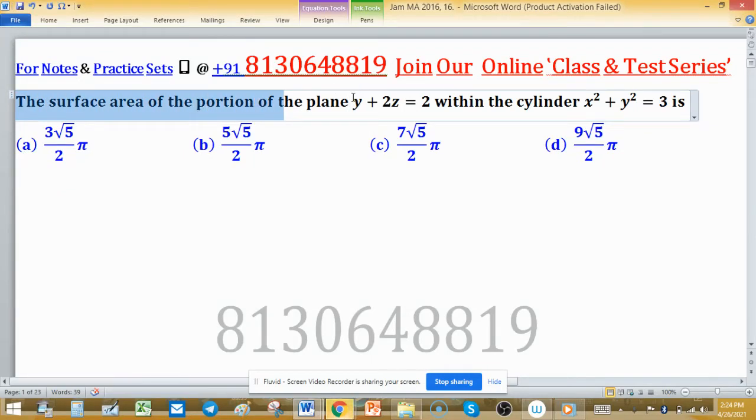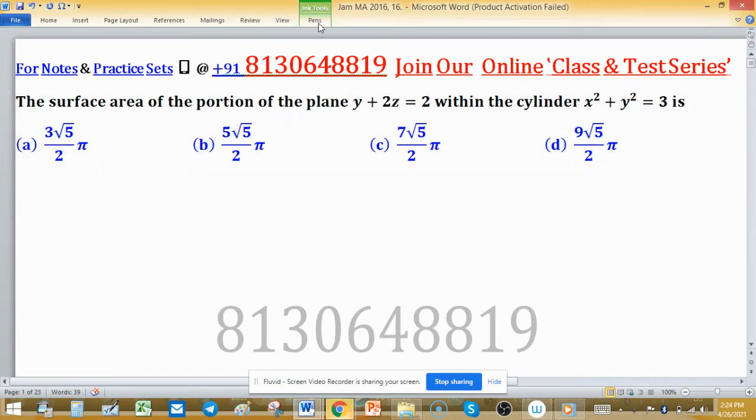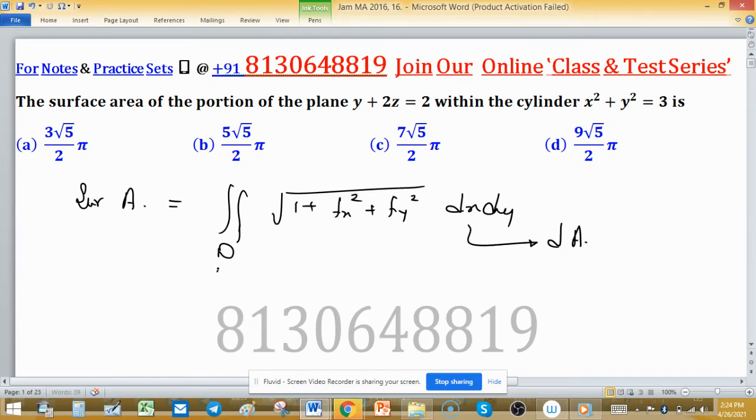The surface area of the portion of the plane y plus 2z equals 2 within the cylinder x squared plus y squared equal to 3. First, what is the meaning of surface area of the portion of the plane? This we can find with the help of this formula: square root of 1 plus fx squared plus fy squared, and this is dx dy, or normally we can write dA, xy coming from the region dxy.